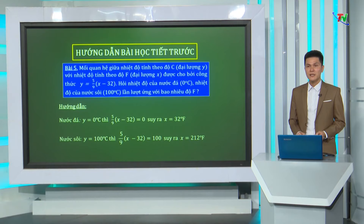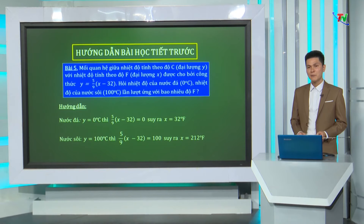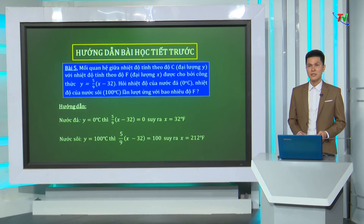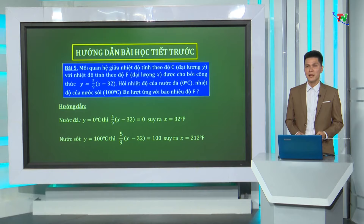Khi Y bằng 0°C, thì 5 phần 9 nhân với (X trừ 32) bằng 0, tương đương X trừ 32 bằng 0, suy ra X bằng 32°F. Khi Y bằng 100°C, thì 5 phần 9 nhân với (X trừ 32) bằng 100. Giải phương trình này ta được X bằng 212°F. Như vậy, nhiệt độ của nước đá và nước sôi lần lượt tương ứng là 32°F và 212°F.